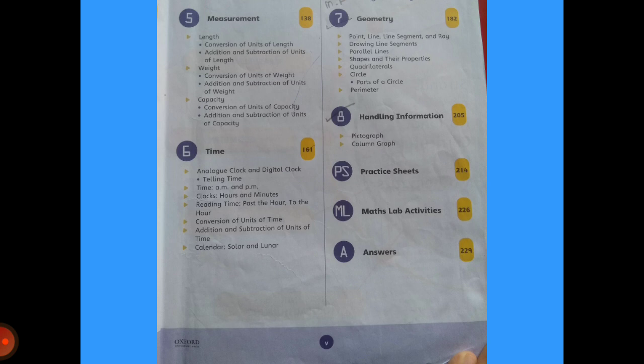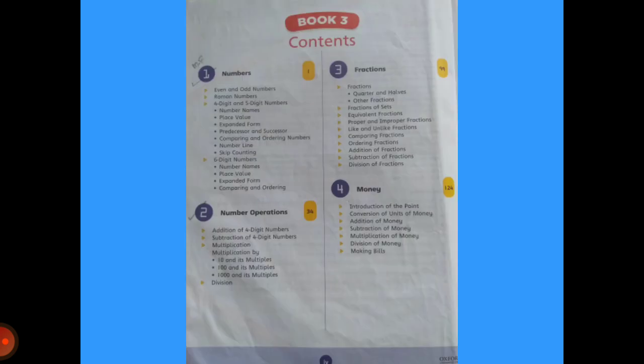These are pictographs and column graphs. In the first term, we have Chapters 7 and 8. We will study information handling, geometry, numbers, and number operations. We will start with numbers. What I want all of you to do is take out the numbers chapter and make your title page for the topic 'Numbers'.